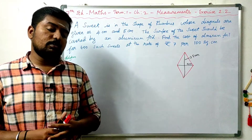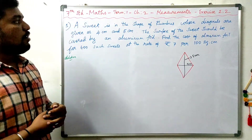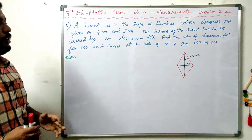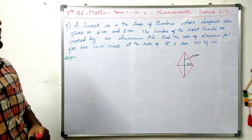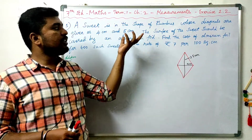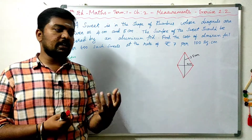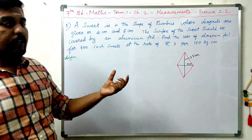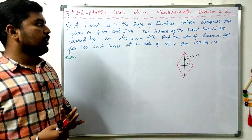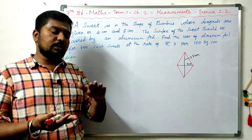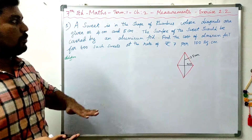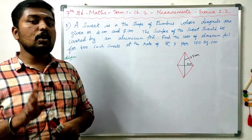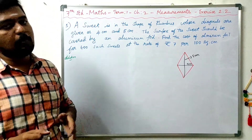Exercise 2.1, fifth question: a suite is in the shape of a rhombus. Its diagonals are given as 4 cm and 5 cm. The surface of the suite should be covered by aluminum foil. Find the cost of aluminum foil for 400 such suites at the rate of Rs. 7 per 100 square centimeters.